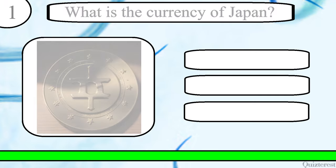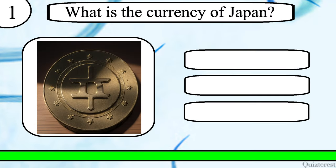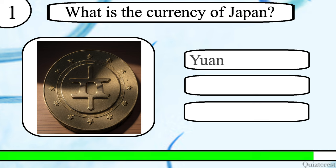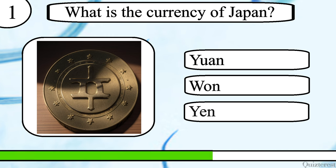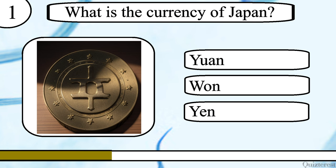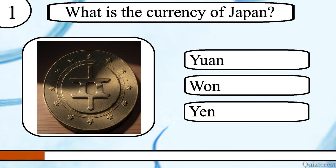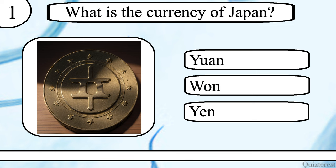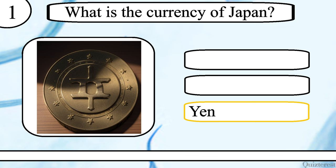Question 1. What is the currency of Japan? Yuan, or Yen? The correct answer is Yen.